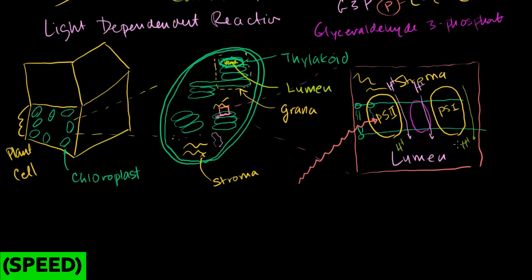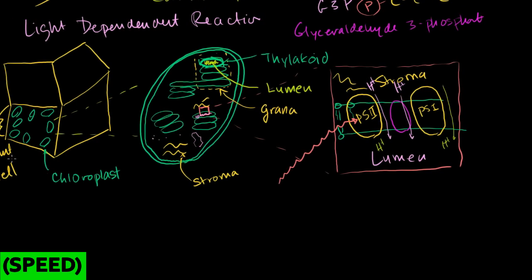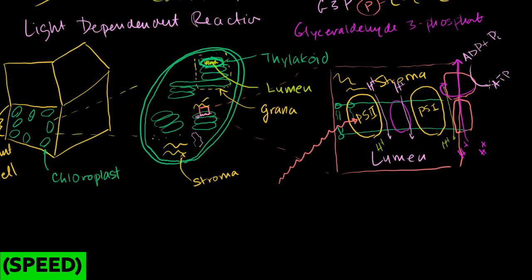You end up with a huge concentration of hydrogen protons in the lumen. Just like what we saw in the electron transport chain, that concentration of hydrogen protons is then used to drive ATP synthase. The hydrogen protons flow back down the gradient from the lumen into the stroma through the ATP synthase — it literally mechanically turns the ATP synthase, like an engine — putting ADP and phosphate groups together to produce ATP.